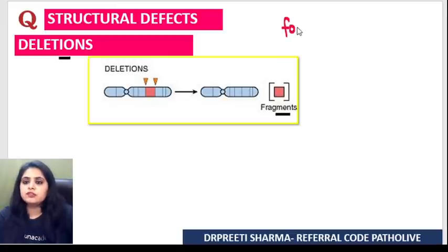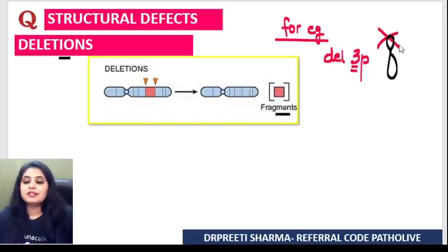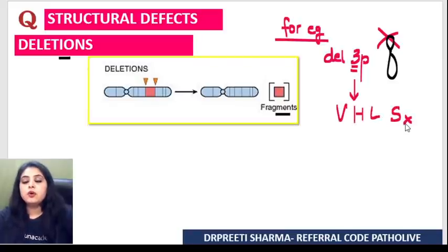Let's talk about some usual deletions. What is deletion 3P? When the short arm (3P) of the third chromosome gets deleted, a three-alphabet syndrome occurs — Von Hippel-Lindau syndrome.